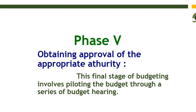Phase five is obtaining approval of the appropriate authority. The final stage of budgeting involves piloting the budget through a series of budget hearings. Piloting means you do not implement the entire budget to the whole population; rather, you implement the budget on a portion of the population so that you can determine the outcomes of that budgeting.